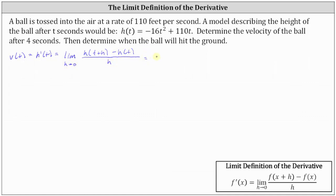This is equal to the limit of: to find h of the quantity t plus h, we replace t with t plus h, which gives us negative 16 times the square of t plus h, plus 110 times the quantity t plus h.